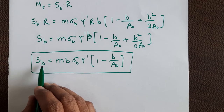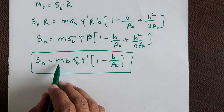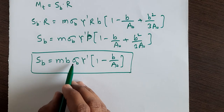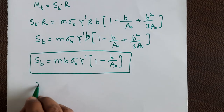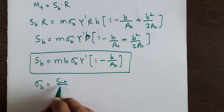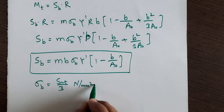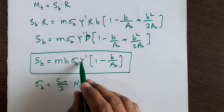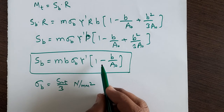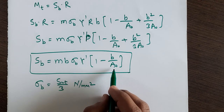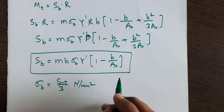In the Lewis equation: m is the module at the large end of the tooth; b is the face width in mm; σb is the permissible bending stress, found as σb = Sut/3 (ultimate tensile strength divided by 3) in N/mm²; y' is the Lewis form factor based on the virtual or formative number of teeth z'; and a₀ is the cone distance.